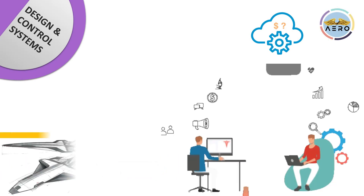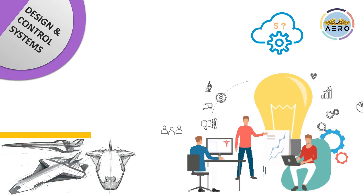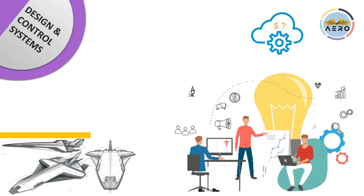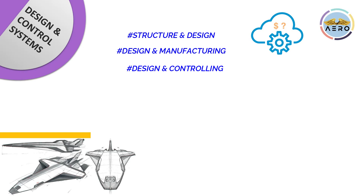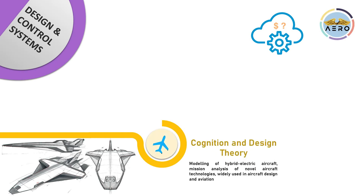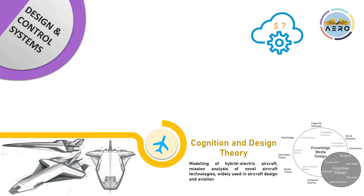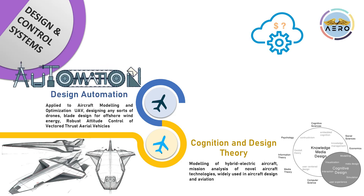Design is sometimes combined with structures, manufacturing, or controls. It can be categorized in 24 forms. In cognition and design theory, it is applicable for modeling any aircraft, UAVs, or airplanes, and for mission analysis of novel aircraft technologies — mostly used in aircraft design and aviation industries.